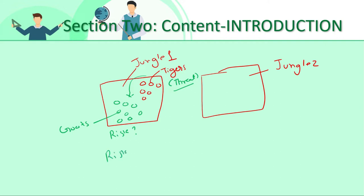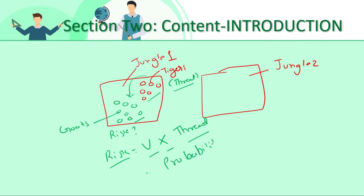So the definition of risk is: risk equals vulnerability multiplied by threat, or when vulnerability is coupled with threat. Threat is there, vulnerability is there, so risk is there. Similarly, using the other definition — probability plus consequences equals risk — is there a probability a tiger can attack these goats? Yes. Are there consequences? Yes, they may kill one of the goats. So there is risk.